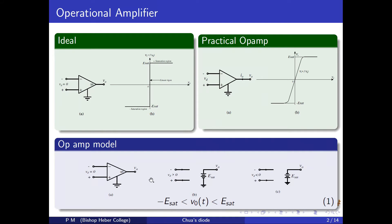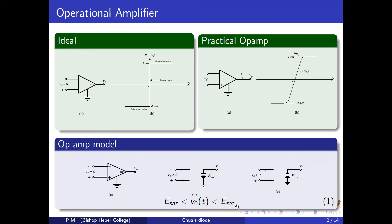The equivalent circuit of an operational amplifier for the linear negative region is shown, along with the positive saturation region and the negative saturation region. In the linear region, the output voltage of the operational amplifier satisfies the inequality called the validating inequality. The equation of the validating inequality is: minus E_sat less than V(t) less than E_sat.